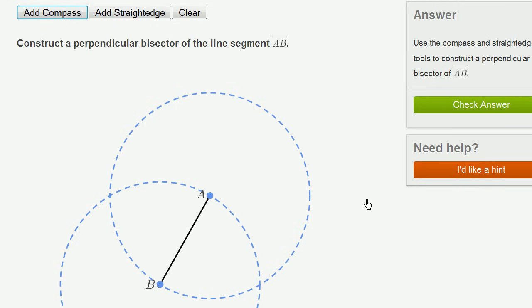And now this gives me two points that I can actually use to draw my perpendicular bisector. If I connect to this point and this point, it is going to bisect AB and it's also going to be perpendicular.